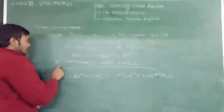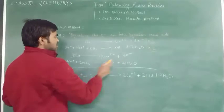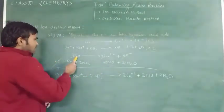And after that, on adding these two equations, 6 electrons and 6 electrons can be cancelled. And after that,